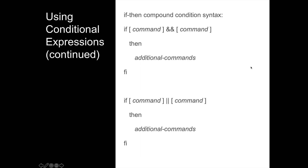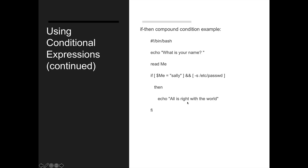There are more variations of the if-then construct. You can logically AND operations together using the double ampersand — both conditions must be true to execute the logic. You can also OR conditions using two pipes, which evaluates true if either condition is true. For example, testing if the variable 'me' is set to sally AND the /etc/passwd file exists — if both are true the script echoes 'all is right with the world'.